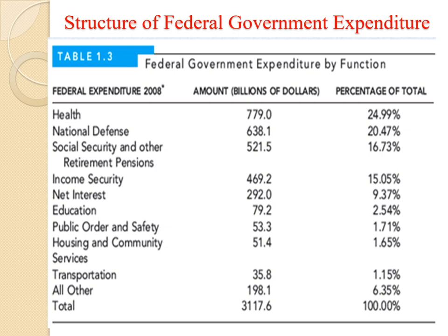Education represents 2.5% of federal expenditures. Public order and safety is 1.7%, and transportation is 1.1%. Each item carries a percentage, and the total sums to 100%, representing the importance of each activity in the government sector.